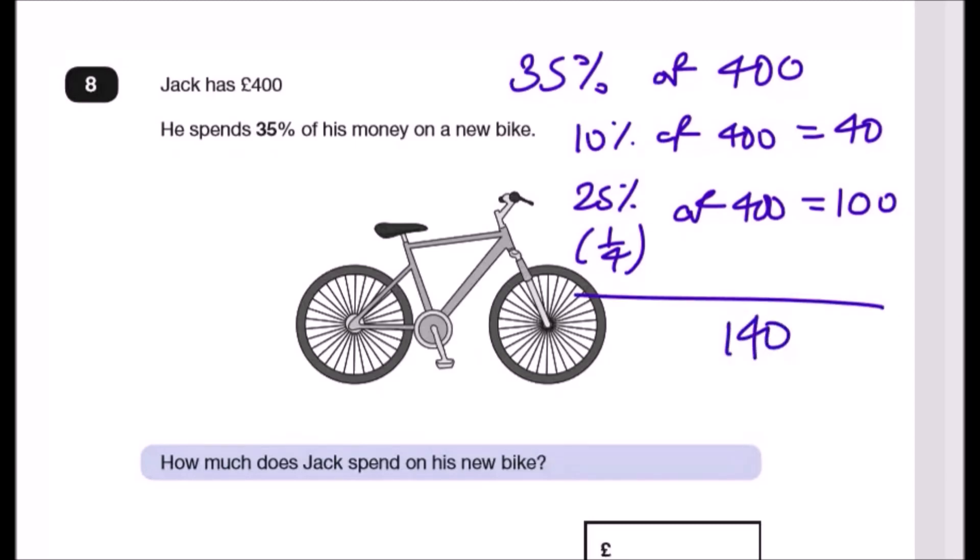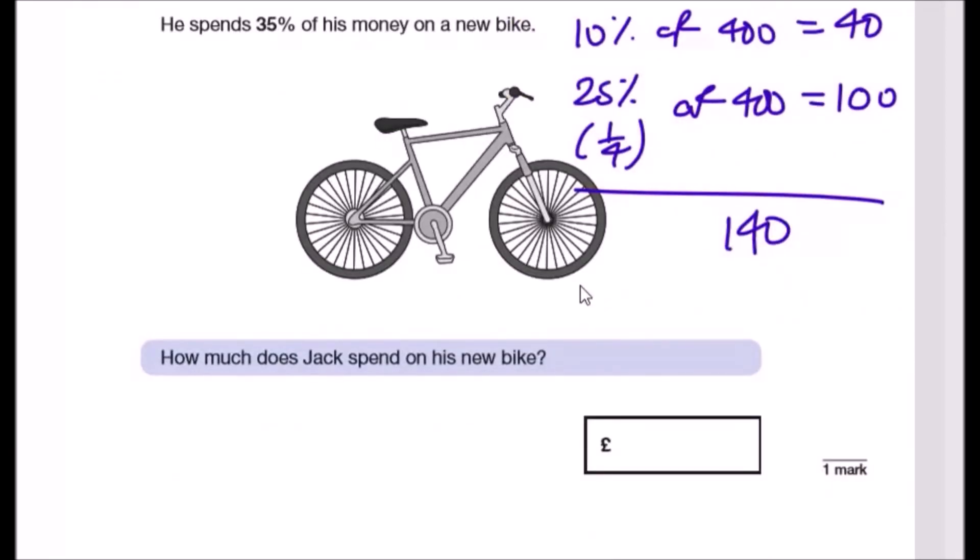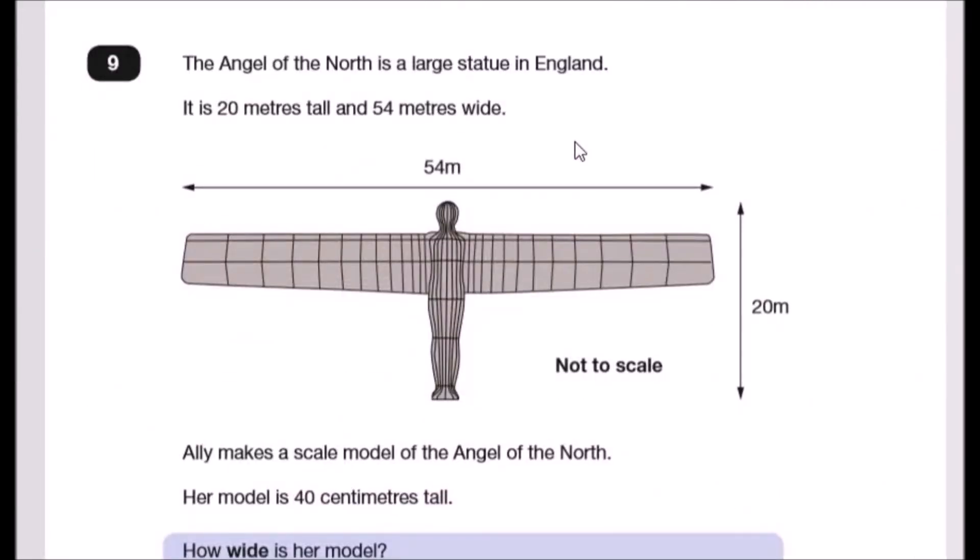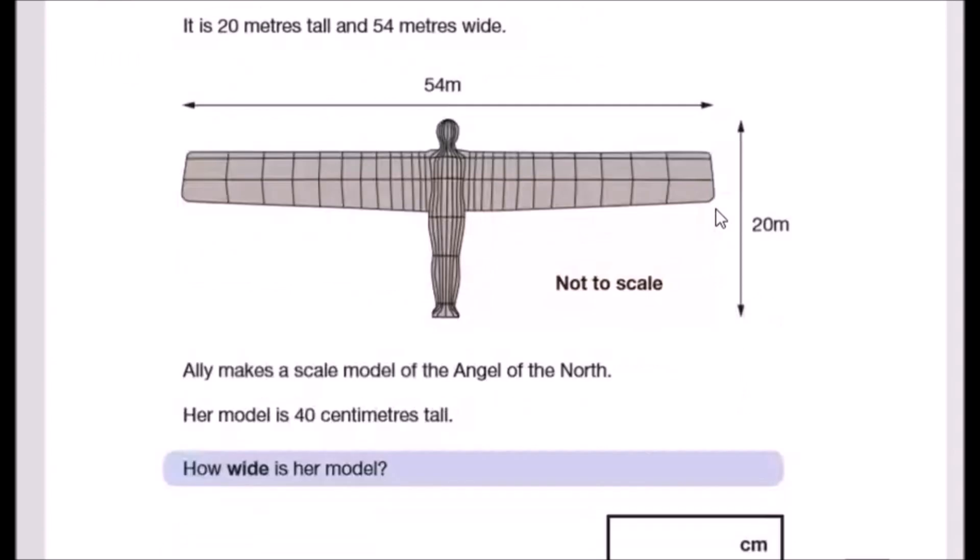So that means Jack spends 140 quid. Not bad for a bike. Now nine. The Angel of the North is the largest statue in England. I've never actually personally seen this guys, but I heard it looks pretty nice. It is 20 meters tall and 54 meters wide.